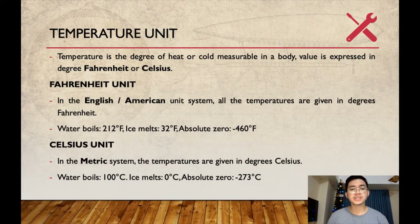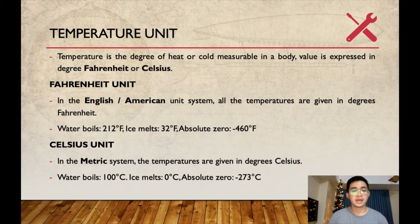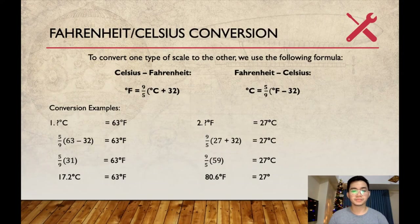Temperature unit: temperature is the degree of measurable heat in a body, expressed in degrees Fahrenheit or Celsius. In the English-American unit system, all temperatures are given in degrees Fahrenheit. In the metric system, temperatures are given in degrees Celsius. One of the measurements used in the aviation field is temperature — for example, oil temperature and cylinder head temperature. To convert from one scale to the other, we use the following formulas.